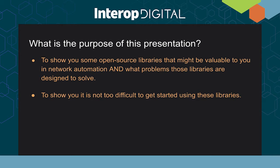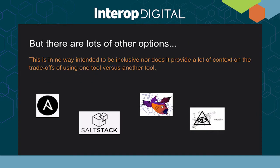The overall purpose of this presentation is to show you some open source libraries that could potentially be valuable to you in network automation, and to show you what problems those libraries are designed to solve — why they were created in the first place. I also want to show you, given our time limitations, that it's not too difficult to get started using these libraries. There are many other open source tools in the network automation space that we won't cover, and we won't spend time on trade-offs between tools.